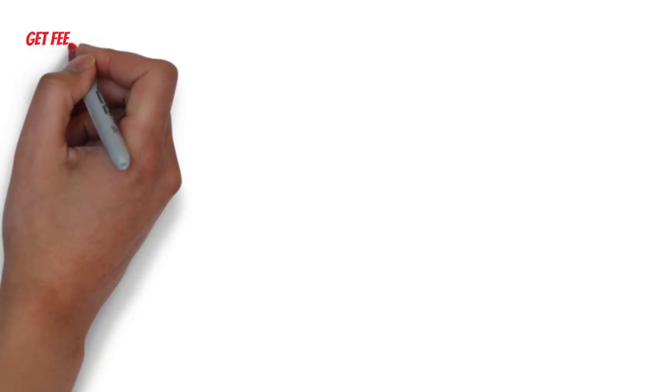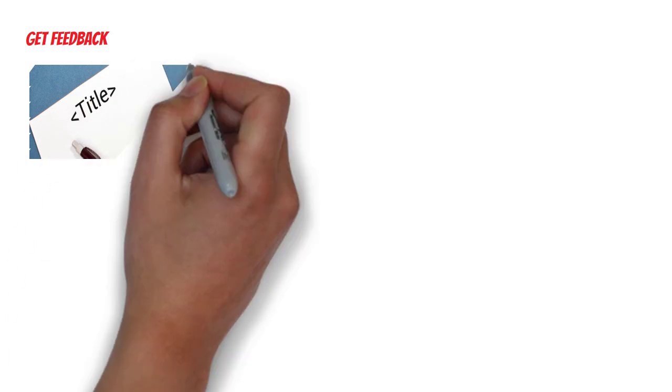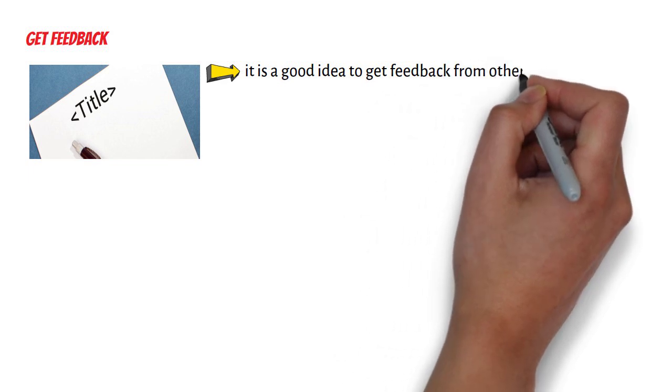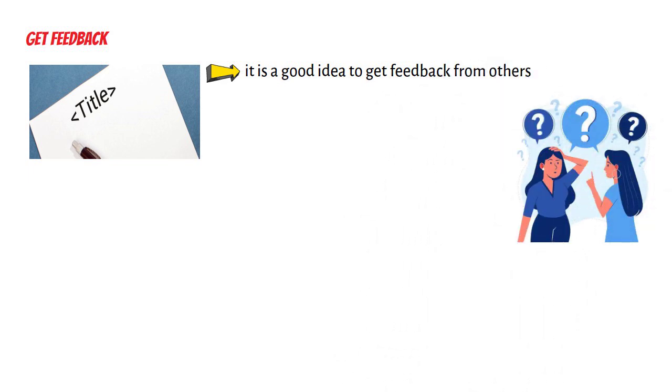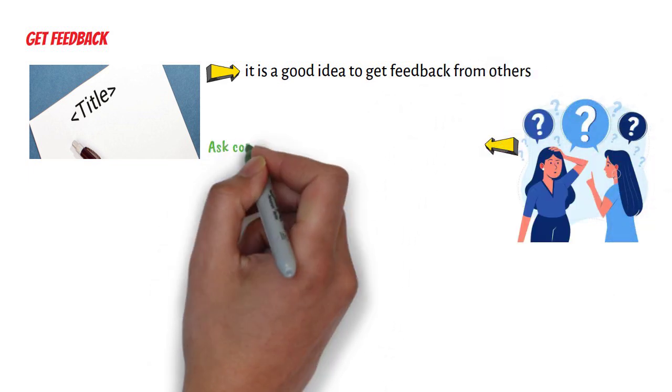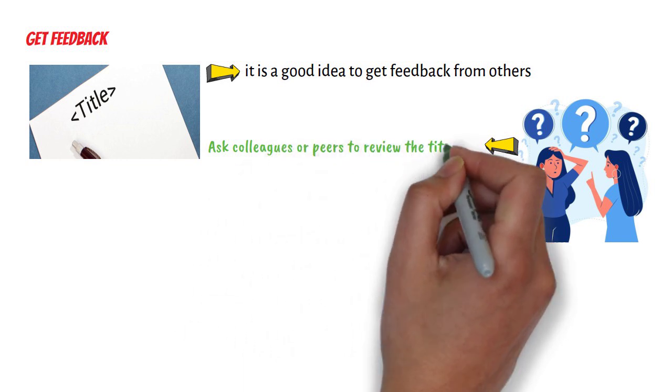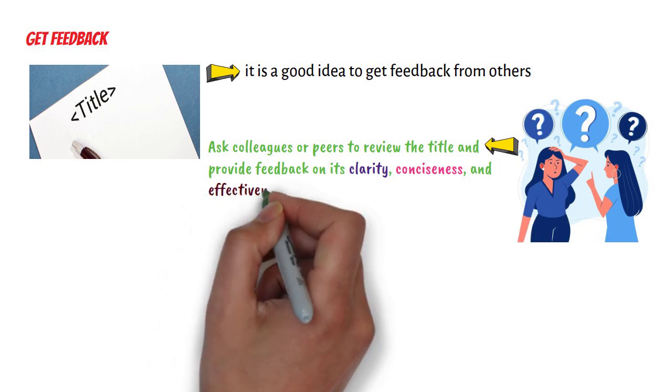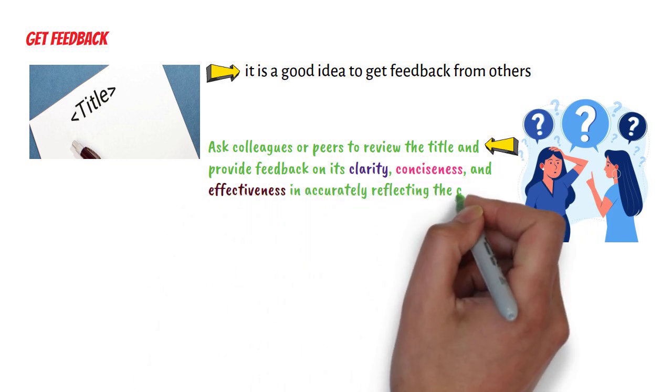Eighth, get feedback. Once you have drafted a research title, it is a good idea to get feedback from others. Ask colleagues or peers to review the title and provide feedback on its clarity, conciseness, and effectiveness in accurately reflecting the content of the paper.